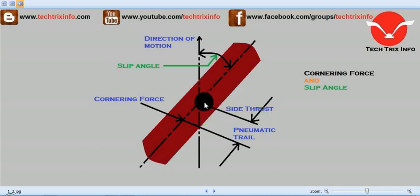You can see the side thrust is happening here and the cornering force is opposite, but it is not directly opposite. It is a bit offset from the direction.